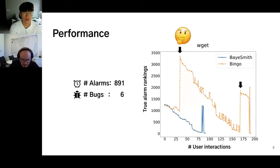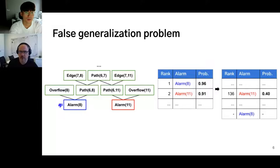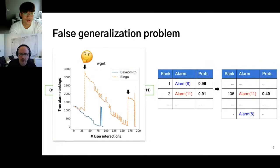The blue line denotes our suggested learning framework, which reduces the alarm inspection burden by about half compared to the original system. The problem with the original system is a sudden drop in probability of a true alarm. From the given program we construct a Bayesian network that captures data flow. For example, blue alarm 8 is a false alarm, and alarm 11 is a true alarm — and these two alarms are tightly coupled, just a few nodes apart. The problem occurs when feedback on a false alarm that is tightly coupled with a true alarm is given to the system, causing a sudden increase in true alarm rankings. We call this the false generalization problem.